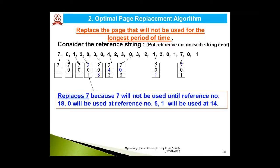The second page replacement algorithm is the Optimal Page Replacement algorithm. The logic here is to replace the page that will not be used for the longest period of time in the future. Some kind of futuristic knowledge is used — the victim page is decided based on its future use in the memory reference string.